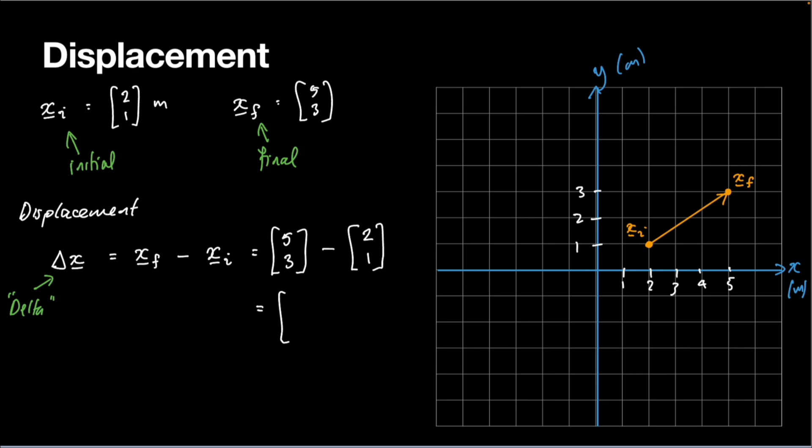So I'll do 5 minus 2. And then I'll do 3 minus 1. And that will give me 3 and 2. And you can see where those values fit on my arrow that I've drawn here.